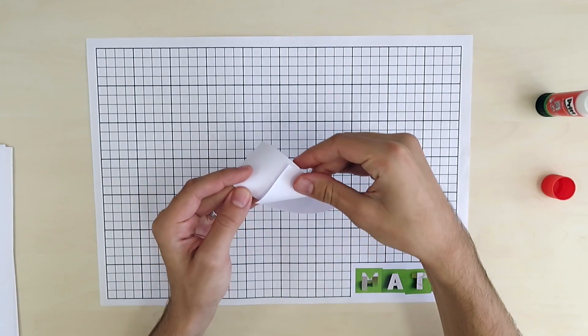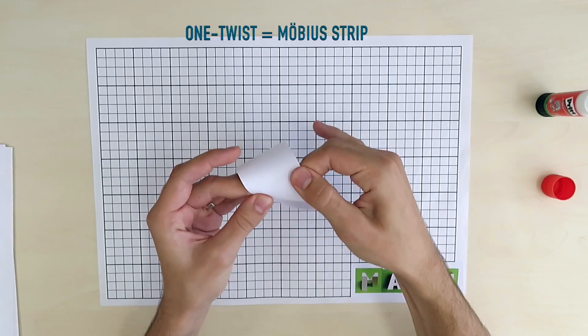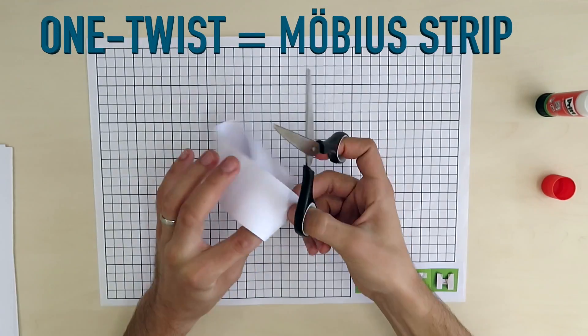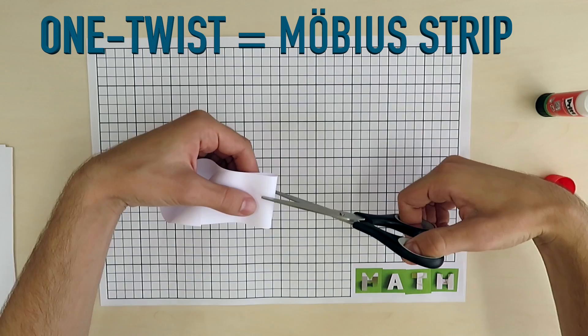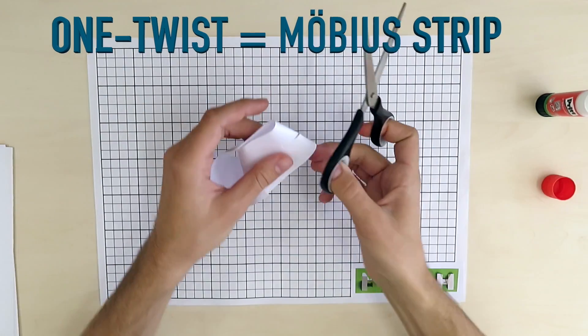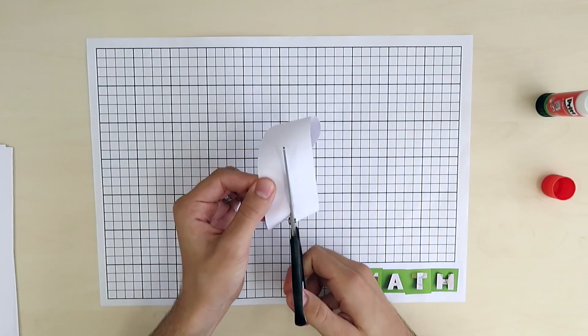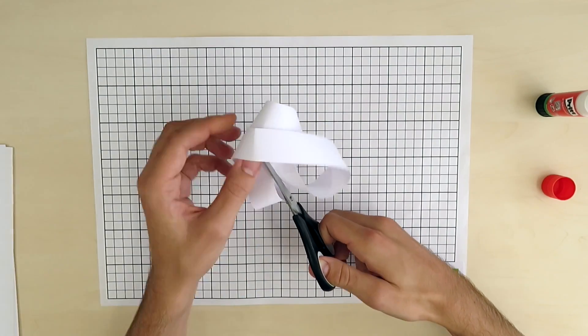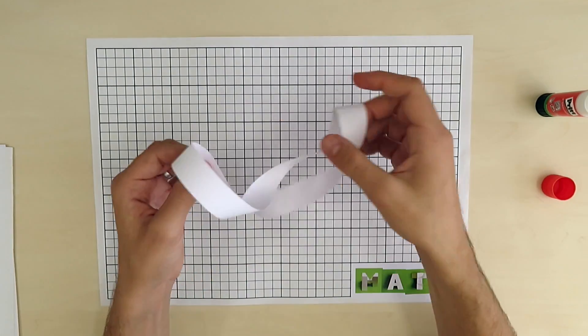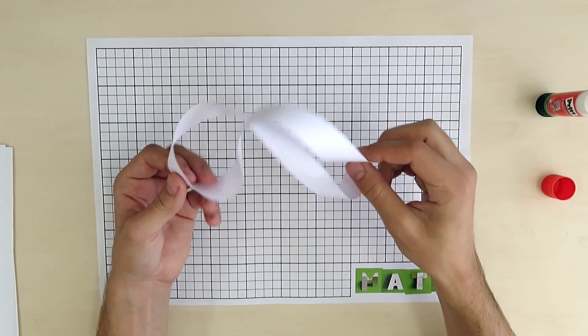However, when we cut in half one twist loop called the Möbius strip, we get one four twist loop.